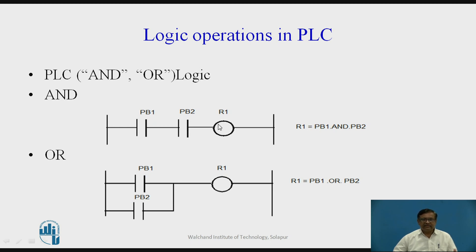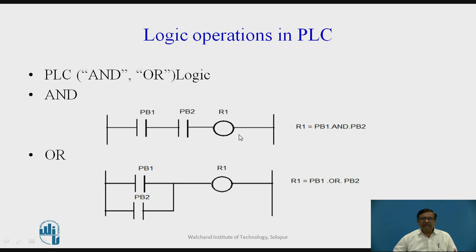This R1 output is activated only when PB1 and PB2 are both active; otherwise R1 is inactive. That is why R1 equals PB1 AND PB2 is written. These are the contacts of a control relay — if this contact is closed and this contact is also closed, then only R1 will get supply and be energized. So PB1 and PB2 are the inputs, and R1 is the output; if both inputs are present, then only the output is energized.